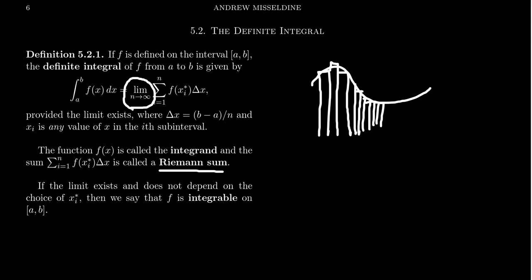If we take the limit as n goes to infinity, as each of these Riemann sums approximates the area under the curve, if we were to use an infinite number of rectangles, we could capture the true area, not an approximation, but the true area under the curve. So we take the limit as the number of rectangles goes to infinity, and the limit of the Riemann sum is what we define to be this definite integral.